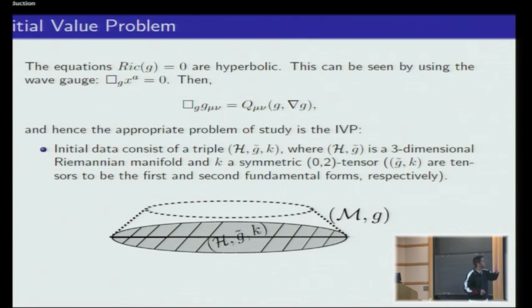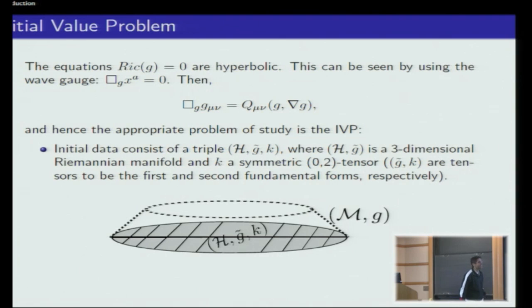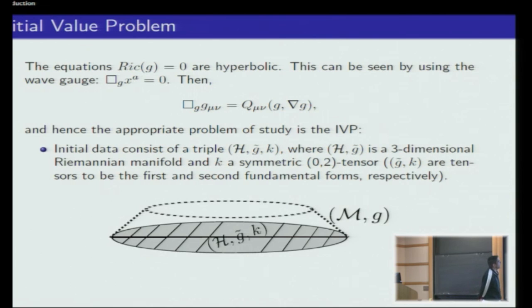The appropriate system to study for hyperbolic equations is the initial value problem. You assume that you know the space at some initial time and you want to understand the evolution, which is exactly given by this system of equations — which is what gravity tells us will happen.